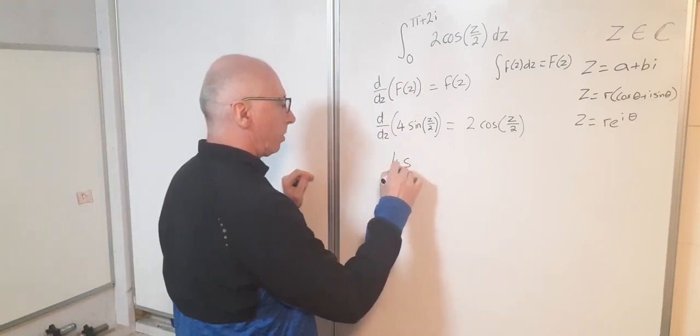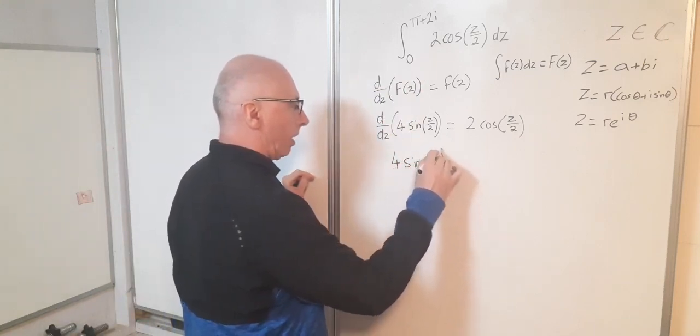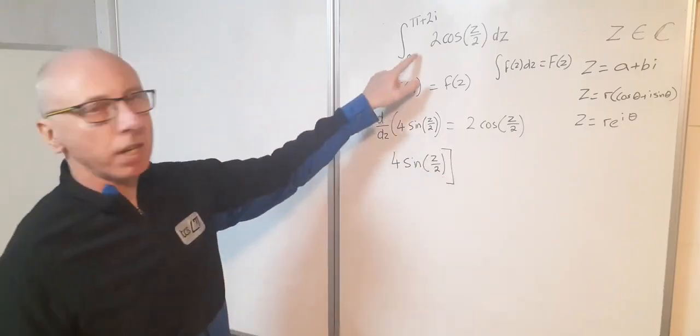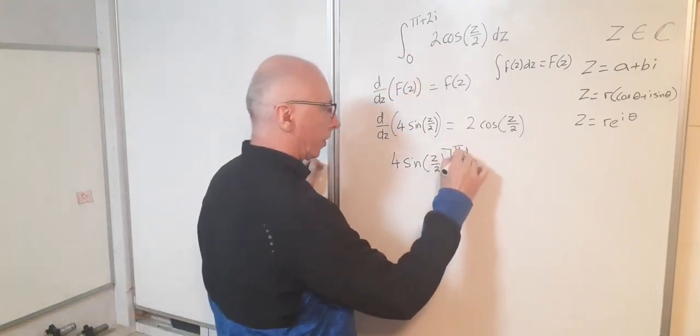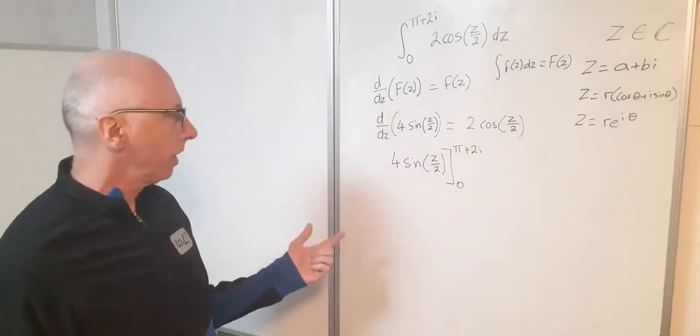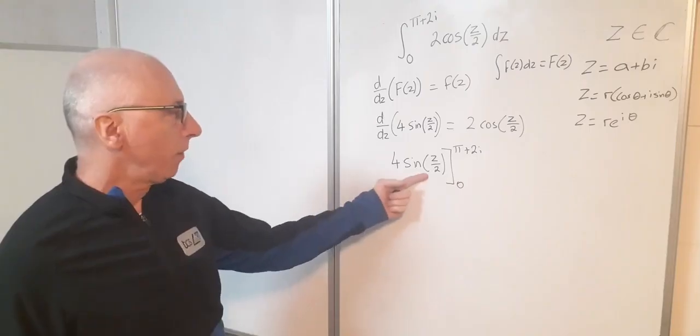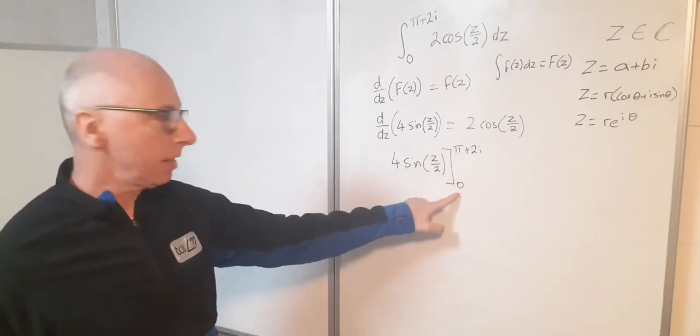So I've got 4 times sine z over 2 all calculated from 0 to pi plus 2i. Okay so now normal rules of calculating an integral: 4 sine where I see a z plug that in and then subtract when I see z is 0.